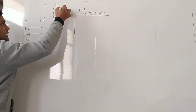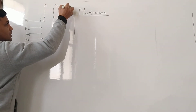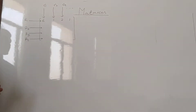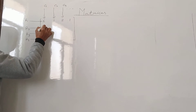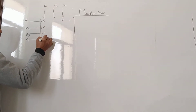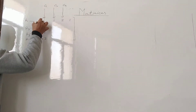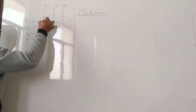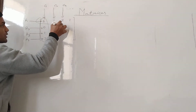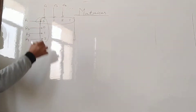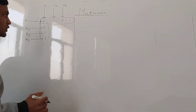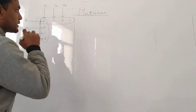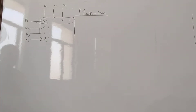Similarly, the columns are: this is the first column C1, second column C2, third column C3, and so on. The vertical elements — like 3, 0, 1, and 2 — this type of arrangement is known as a column, and the horizontal element is known as a row. So the matrix is just an arrangement of numbers in the form of rows and columns.